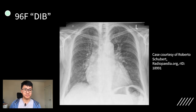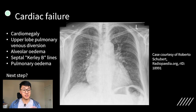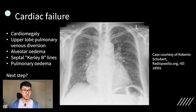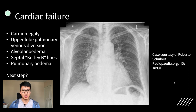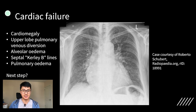Now pause the video and have a look at this one. So this chest radiograph demonstrates many of the features of cardiac failure. Firstly, you have cardiomegaly or a large heart. On a PA projection, the width of the heart should be less than half of the width of the thorax, so in this case you can see it's more. Other features include upper lobe venous diversion. This is sometimes called the stag's antler sign, where you can see the upper lobe pulmonary veins distended like stag's antlers.